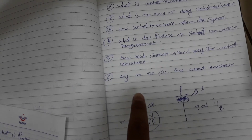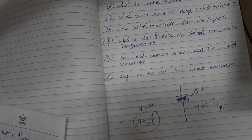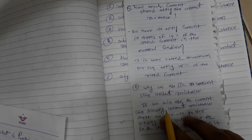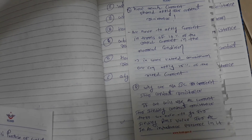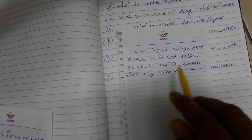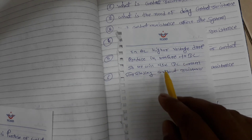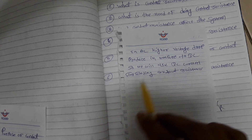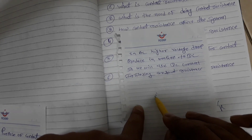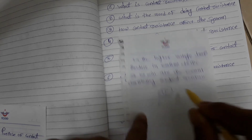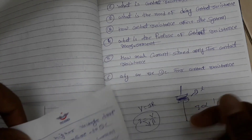Why do we use DC current for contact resistance measurement, and not AC? The answer is: if we use AC current, we have to find the RMS value, and AC has inductance present. In AC, a higher voltage drop is produced compared to DC. So we use DC current for contact resistance measurement — when we perform contact resistance measurement, we inject DC current.